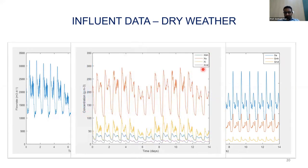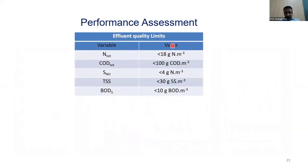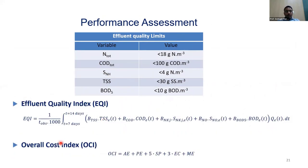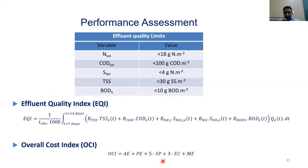Performance assessment strictly follows environmental legislation limits for COD, BOD, nitrogen, ammonia, and total suspended solids. The important metrics are the effluent quality index (EQI) and the overall cost index (OCI), which is a combination of aeration energy, pumping energy, sludge production cost, external carbon addition if applicable, and mixing energy. We determine all these energies to arrive at the overall cost index for the treatment plant.